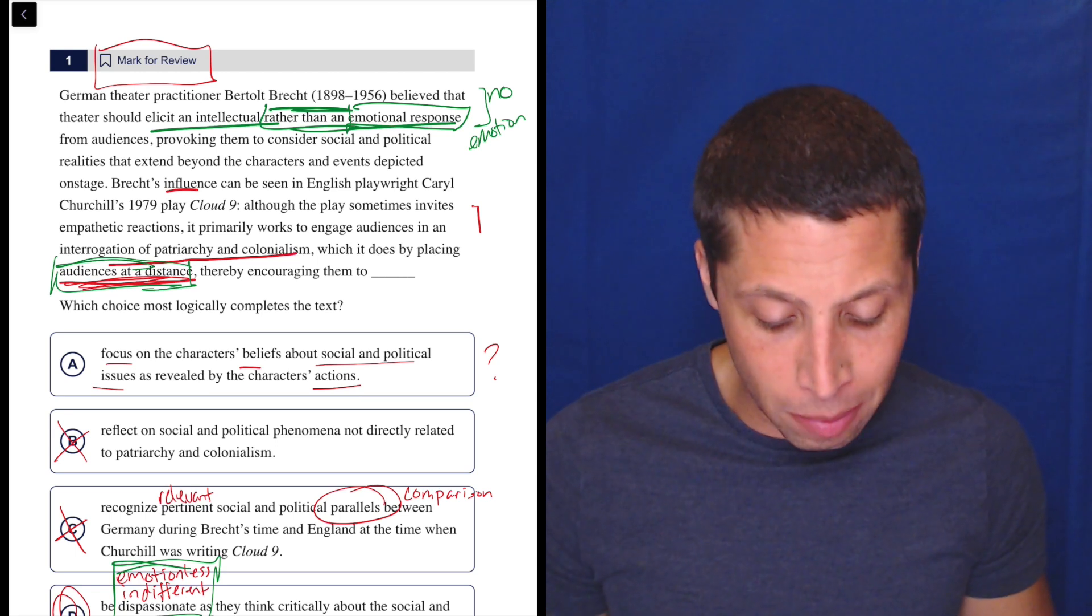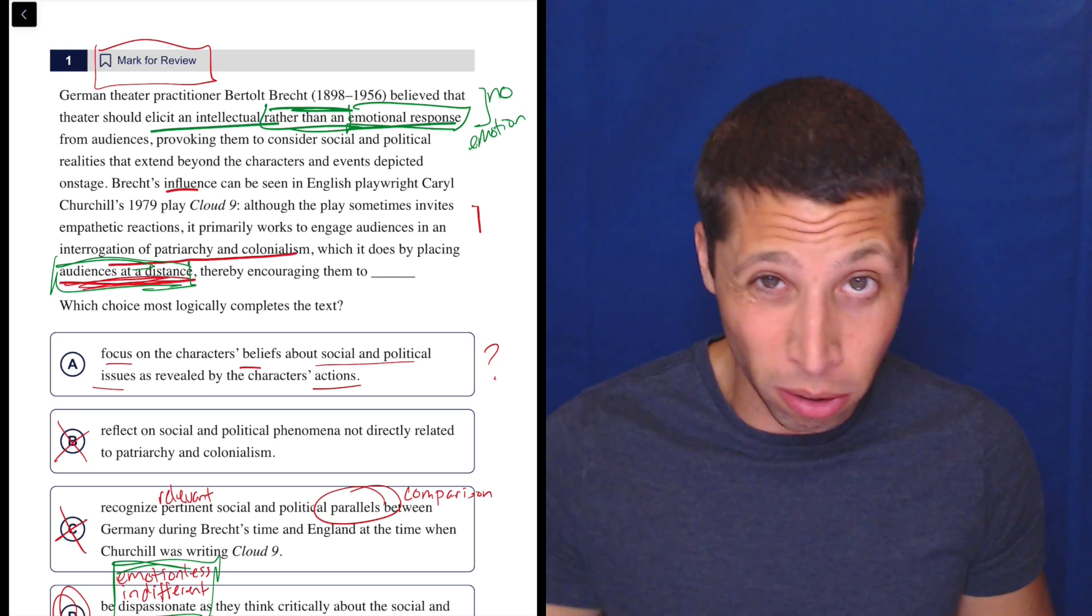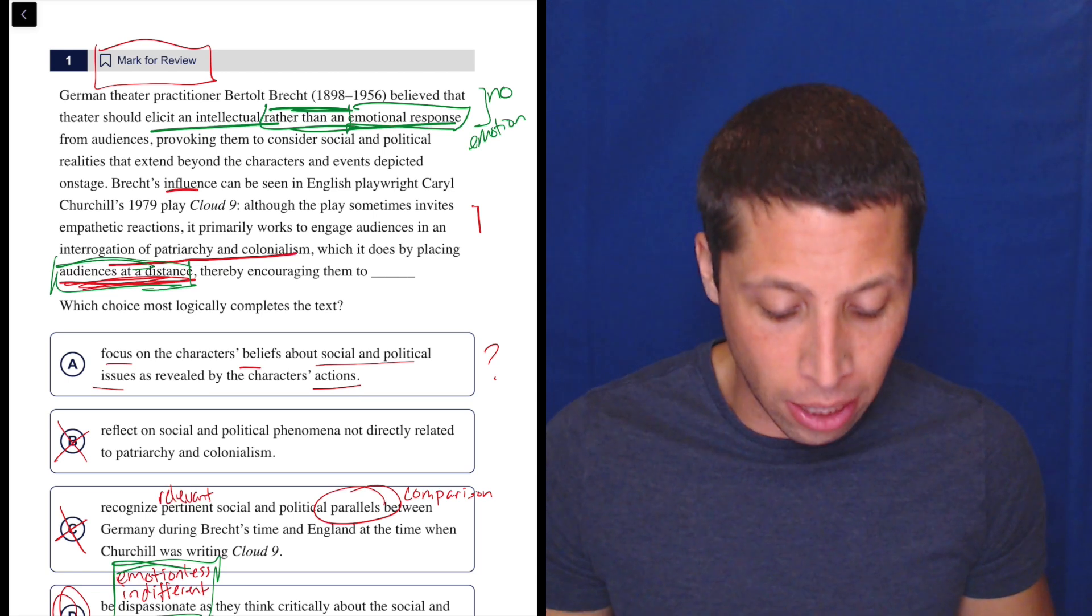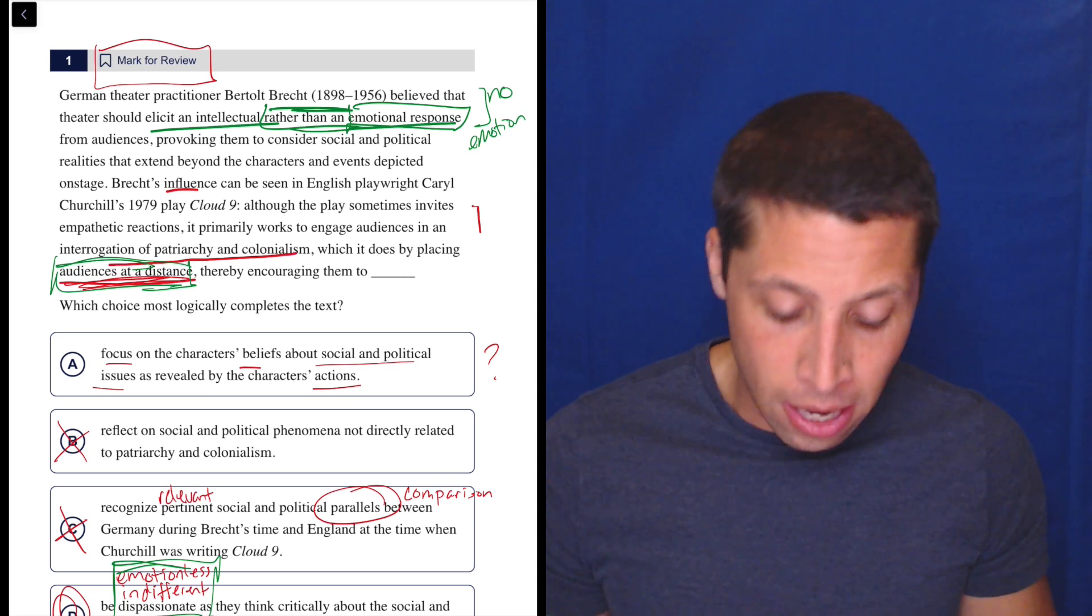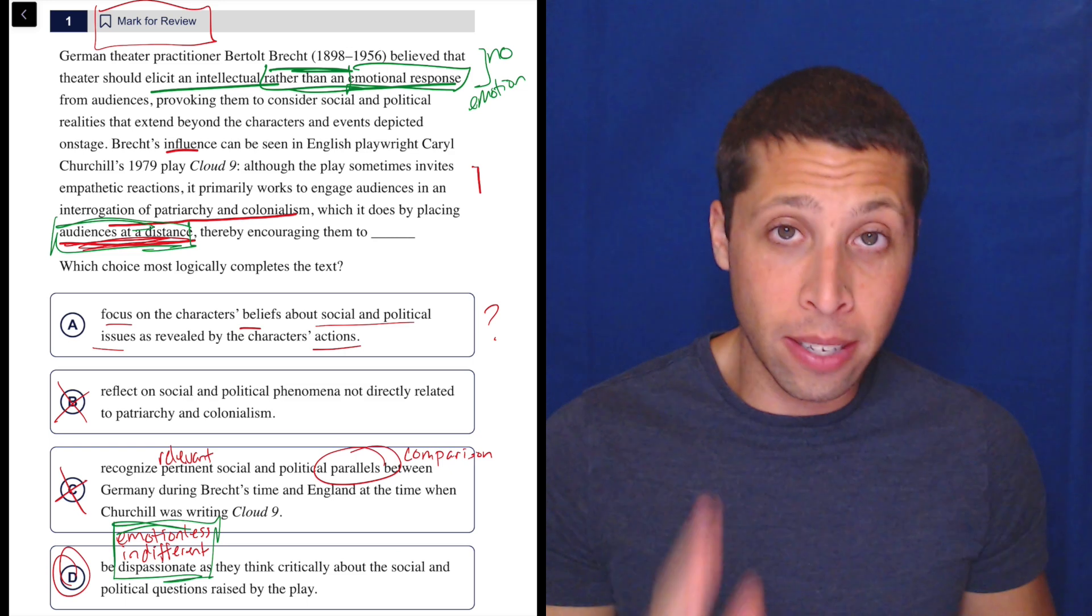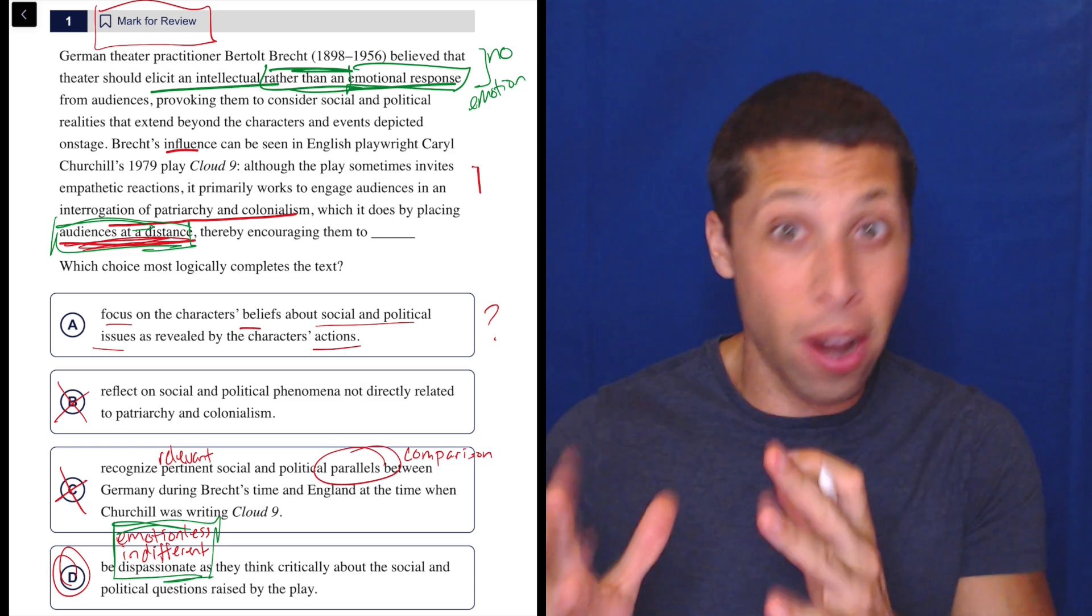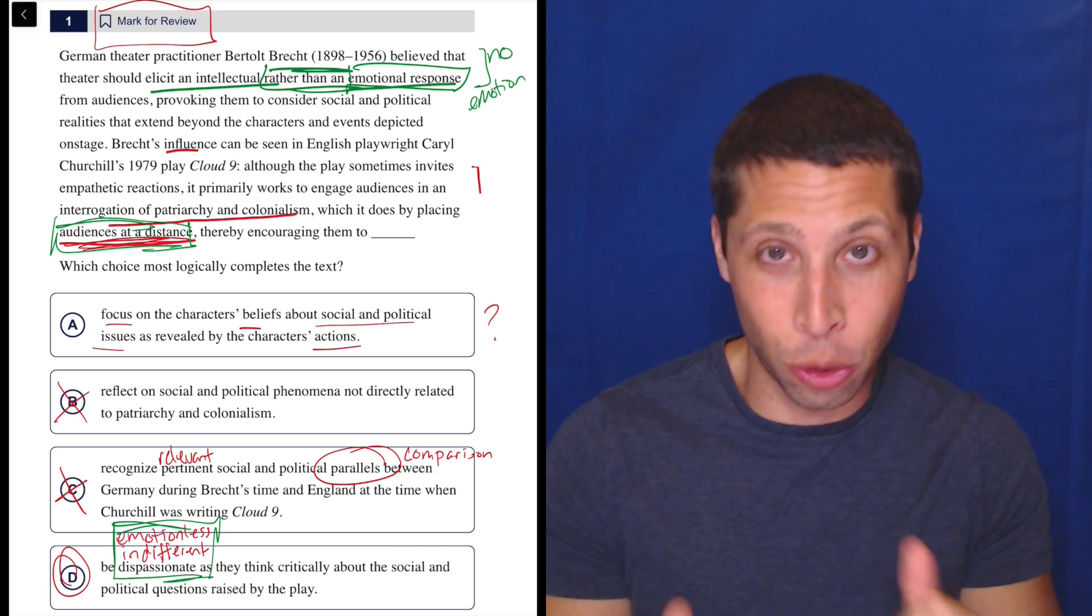So Brecht's influence can be seen in this person, although the play sometimes invites empathetic reactions, emotional reactions. It primarily works to engage audiences in an interrogation of patriarchy and colonialism, meaning intellectual things, which it does by placing audiences at a distance. So I am more confident that D is right because that idea of being emotionless is very specific and in all three places. Twice in the passage, once in the choice.